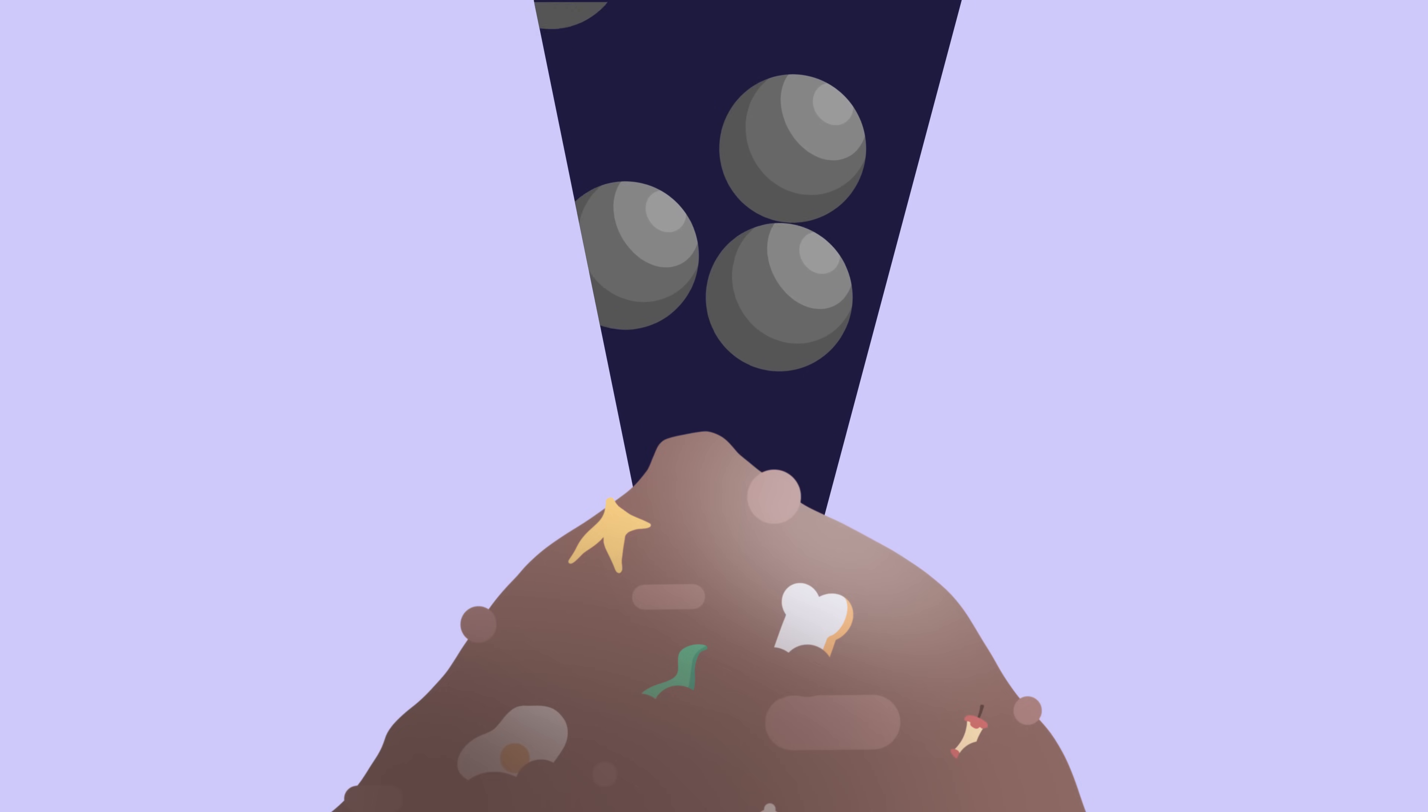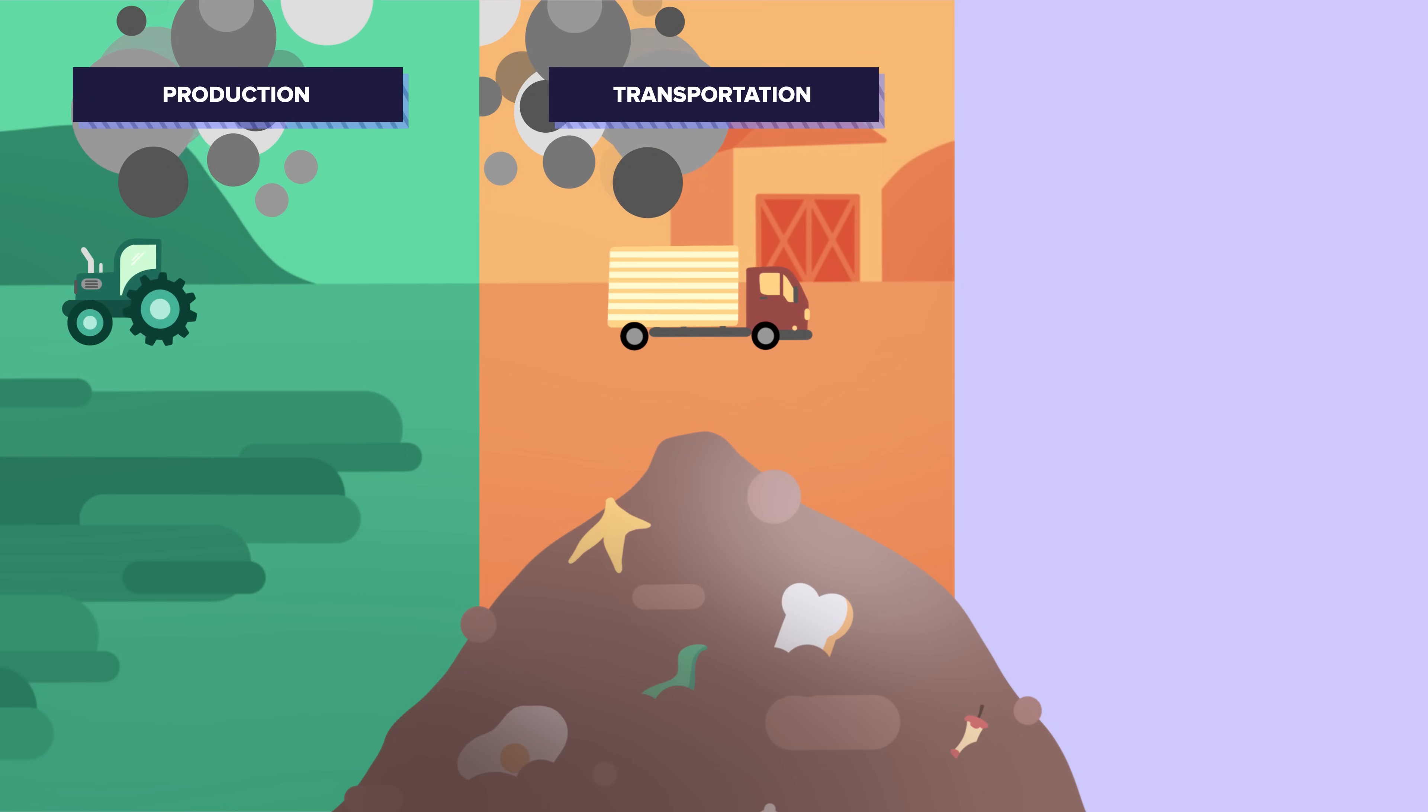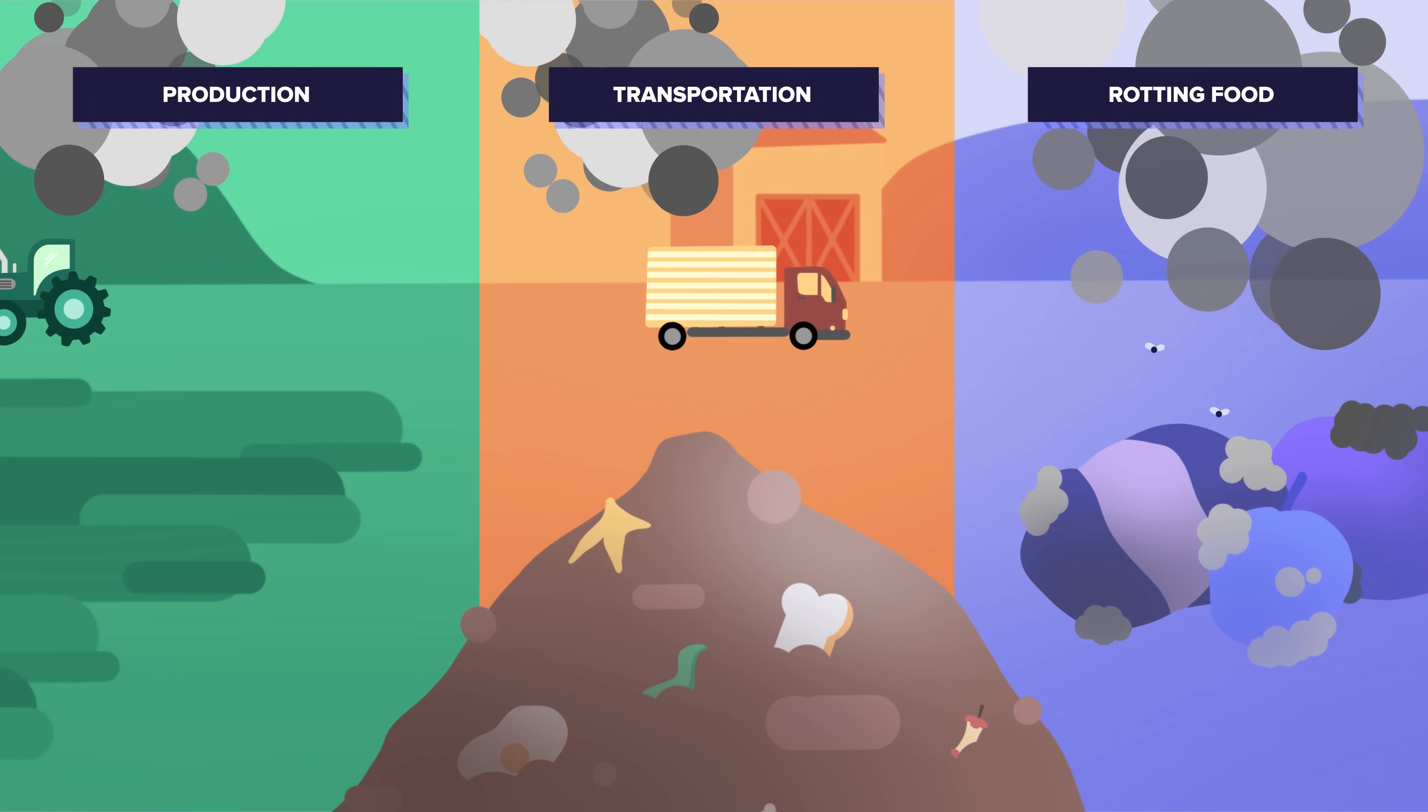These emissions not only come from the production and transportation of the wasted food, but they also come directly from the rotting food itself, when it is broken down by microorganisms.